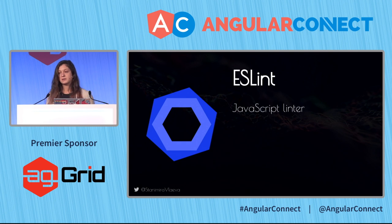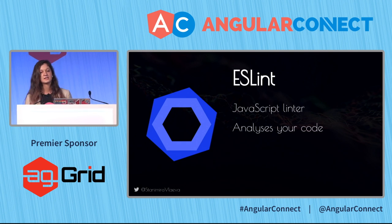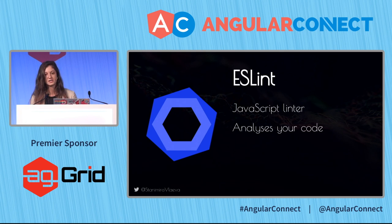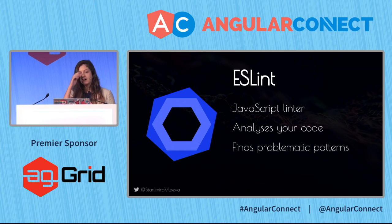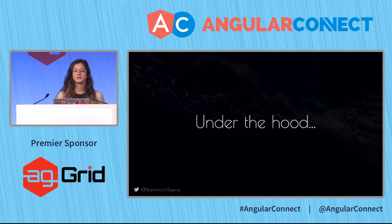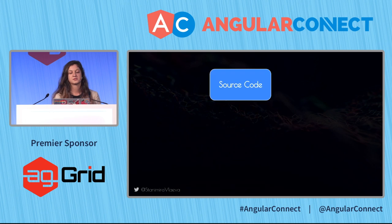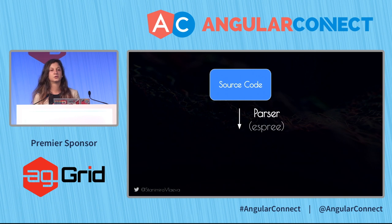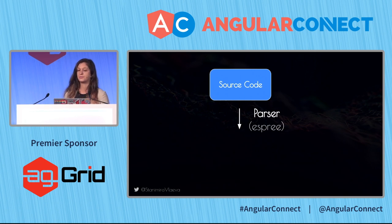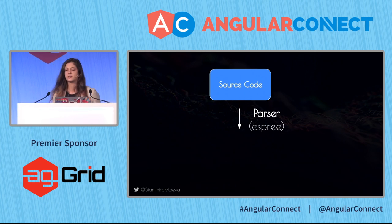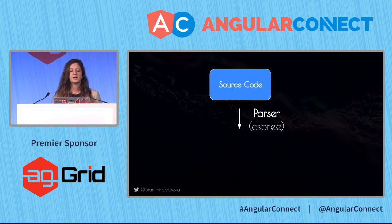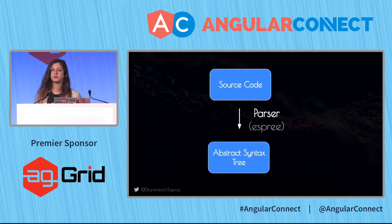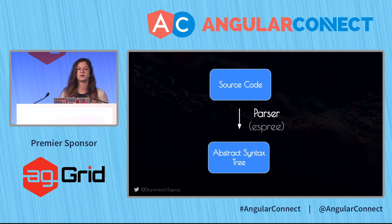ESLint is a JavaScript linter. It analyzes your code statically, meaning it doesn't actually execute it, and it can find problematic patterns and report problems. Under the hood, ESLint takes your source code and runs it through a parser. The default parser for JavaScript is called Espree. It generates a data structure called an Abstract Syntax Tree, or AST.